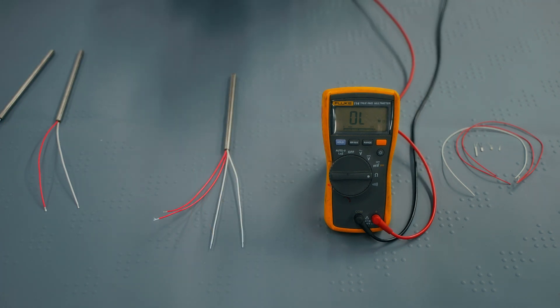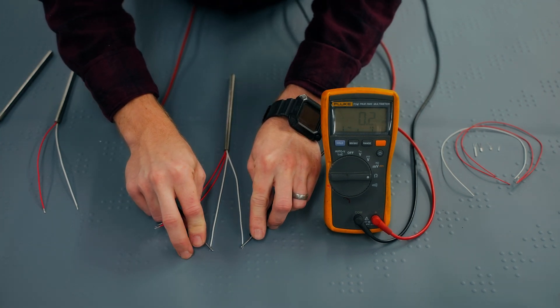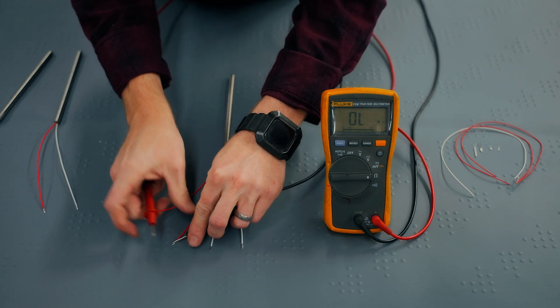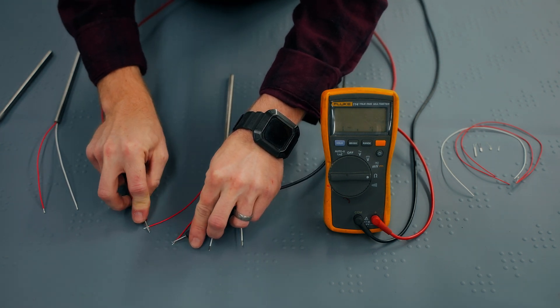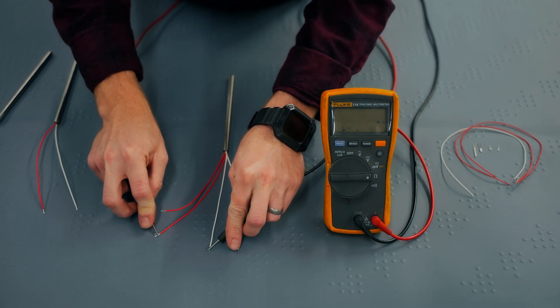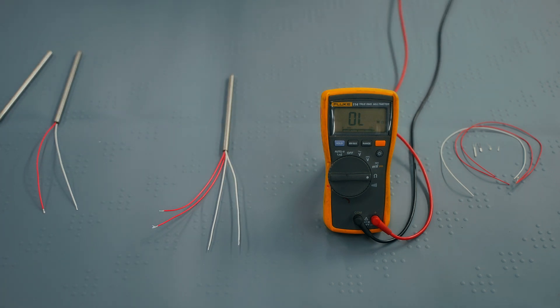On a four-wire RTD, the wires are connected in pairs. Two go to one side of the element, and two go on the other side of the platinum element. Check the resistance between both pairs of light color wires, and make sure it reads close to zero ohms. Then, check the resistance between any two dissimilar color wires. This RTD also reads about 109 ohms, so it's functional.